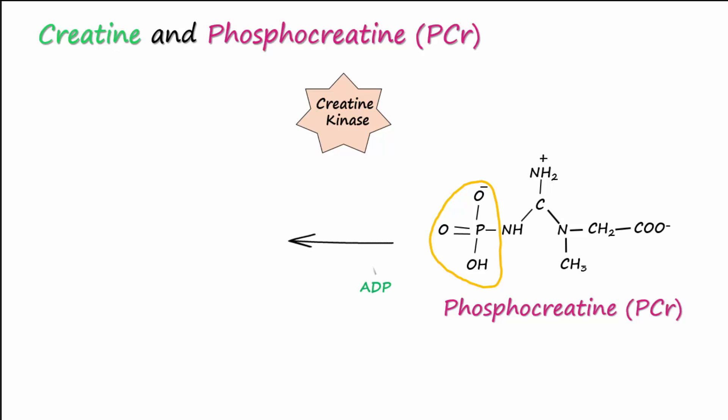This reaction also yields creatine. Alternatively, when there is excess ATP, creatine kinase can remove a phosphate from ATP and convert creatine to phosphocreatine.